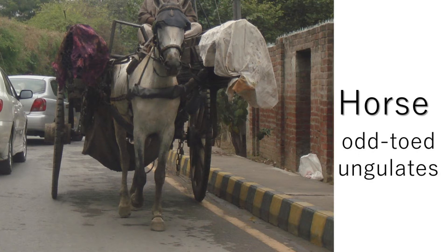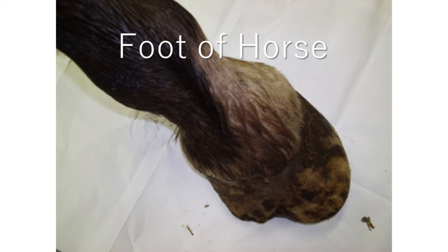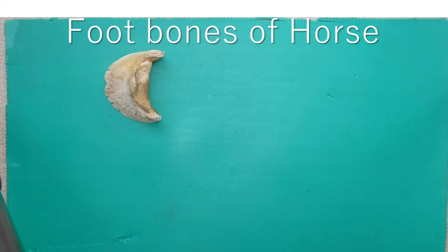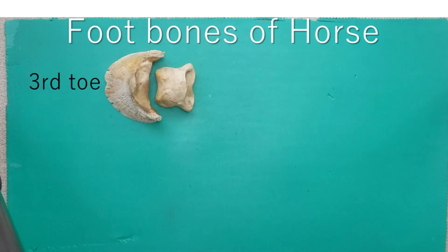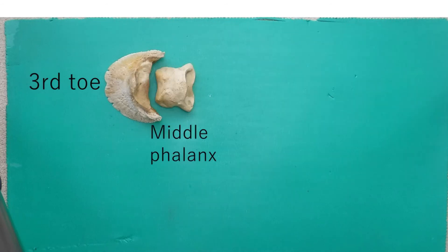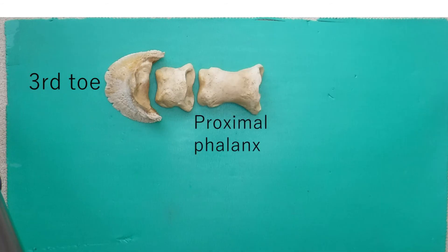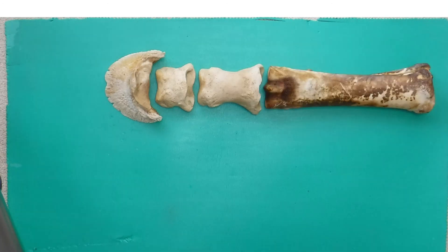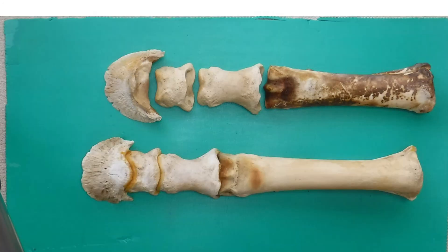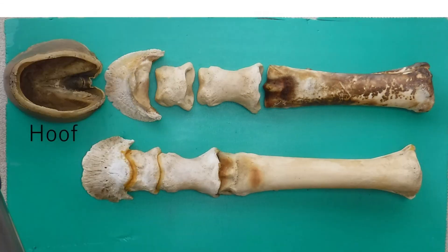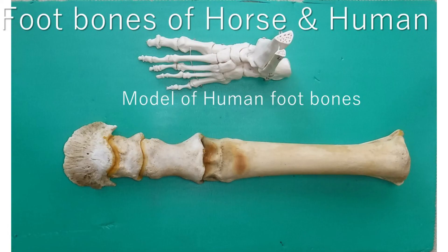Next, let's look at the foot bones of horse. Horse is an odd-toed ungulate and bears its weight on the third toe only. Let's compare horse foot bones with a human foot bones model.